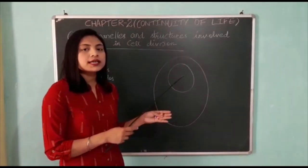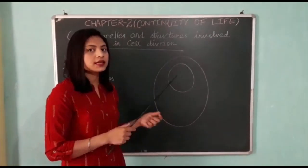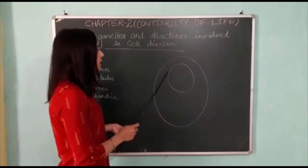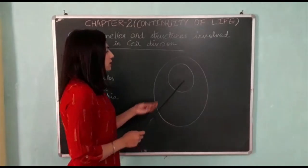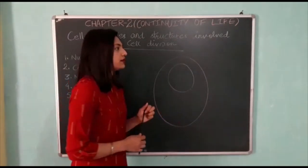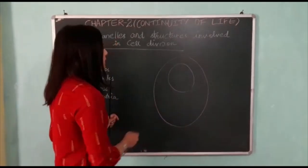When you see this organized shape of the nucleus, you see it in a cell's resting stage. Then the first stage of cell division begins.